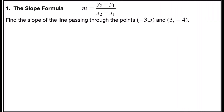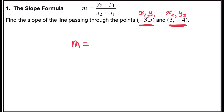Problem number one is the slope formula. It says slope is equal to y sub 2 minus y sub 1 over x sub 2 minus x sub 1. The problem says find the slope of the line passing through the points negative 3, 5 and 3, negative 4. So I'm going to label my first point, which I will use negative 3, 5, so my first x coordinate is negative 3, and my first y coordinate is 5.